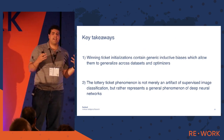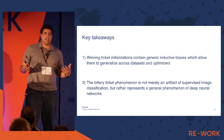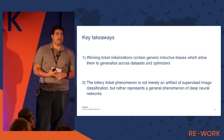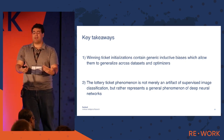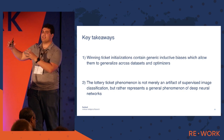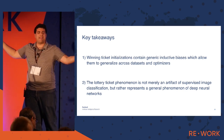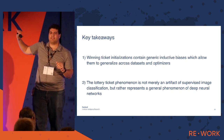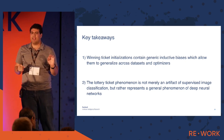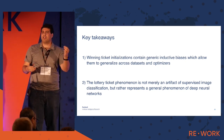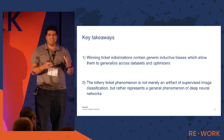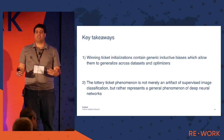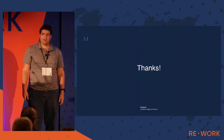To finish up, the key takeaways are: winning ticket initializations do contain generic inductive biases, which makes them practically useful — we can take winning tickets from one dataset and apply them to new problems, so long as they're similar enough to the original. Maybe not quite as well as generating from scratch, but close. Second, this phenomenon isn't just an artifact of supervised image classification but says something deeper about how deep learning works more broadly. I'll be happy to take any questions.